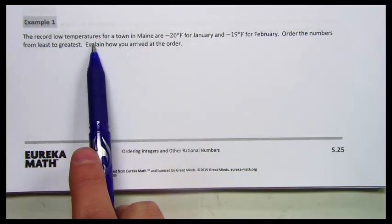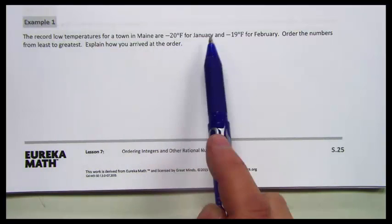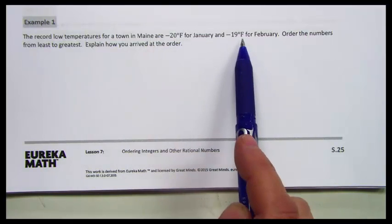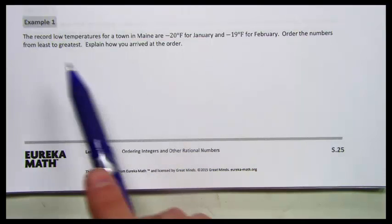In this problem, the record low temperatures for a town in Maine are negative 20 degrees Fahrenheit for January and negative 19 degrees Fahrenheit for February. We want to put these two numbers in the order from least to greatest.